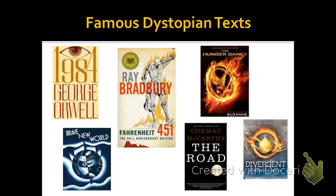Here are some famous dystopian texts. The three on the right are the ones that we will look at in this unit: 1984 written by George Orwell, Brave New World by Aldous Huxley, and we will begin with Fahrenheit 451 by Ray Bradbury. All of these books were written in the 40s and 50s. The other three texts are more contemporary: Cormac McCarthy's The Road, Suzanne Collins' The Hunger Games, and Veronica Roth's Divergent series. Through The Hunger Games and Divergent, it shows just how popular the dystopian genre still is today, and these are only six of a quite large list of dystopian texts.